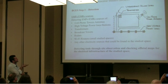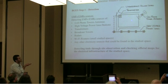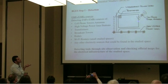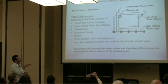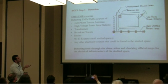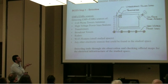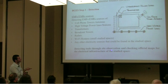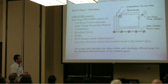For detection of electromagnetic sources in a space, I need to detect cell phone towers in the surrounding area, transformers, high voltage power lines, underground power lines, and so on — all power sources. Detection is done through site observation and checking official maps for electrical infrastructure.